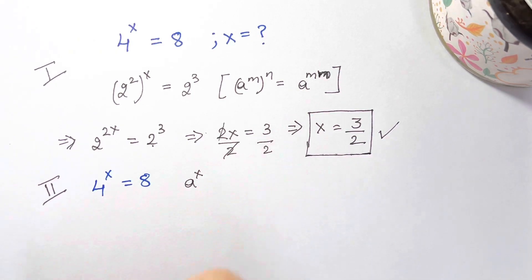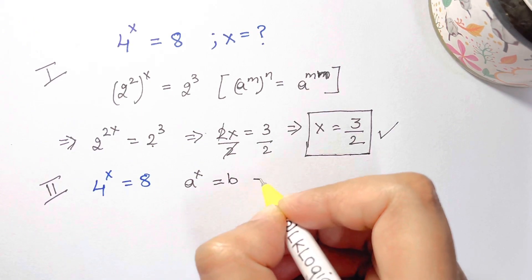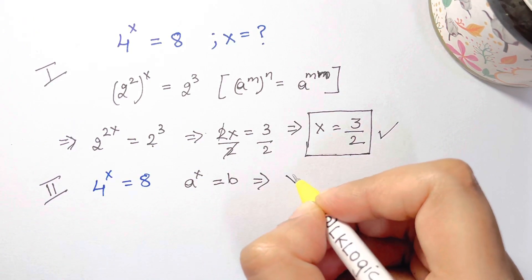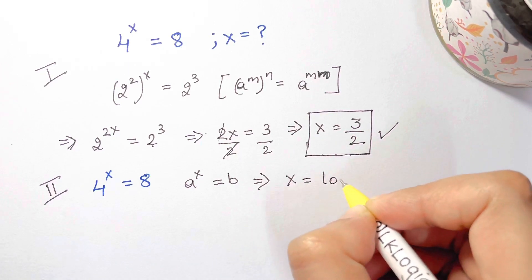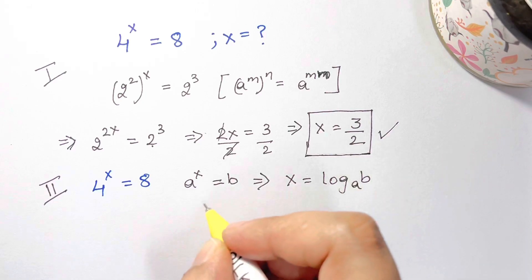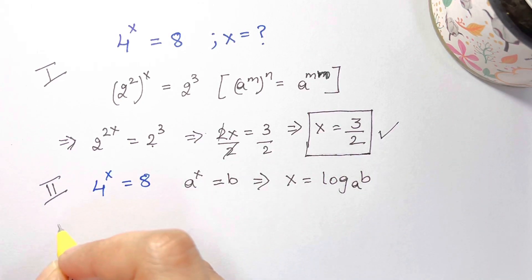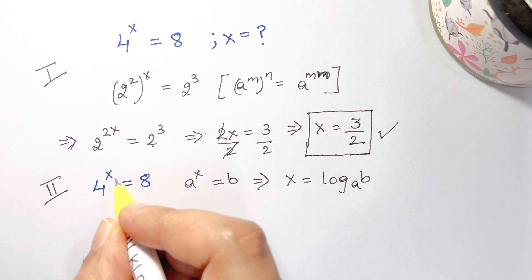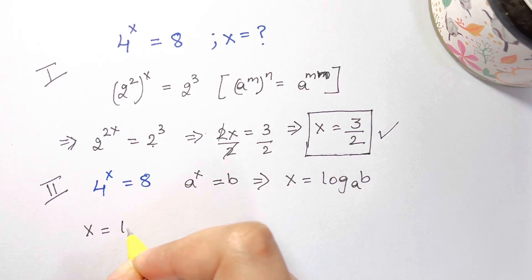Whenever you have something like a^x = b, then we write this as x = log_a(b). So we now apply this here: x = log 8 to the base of 4.